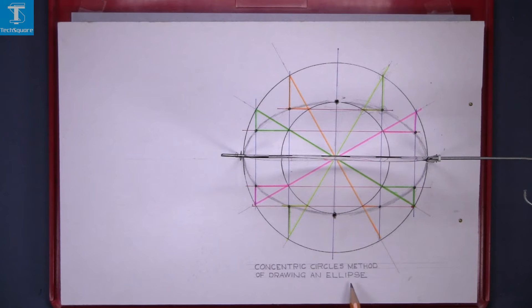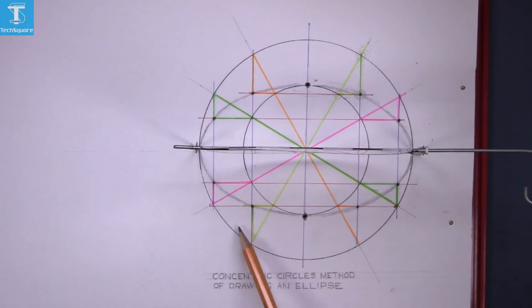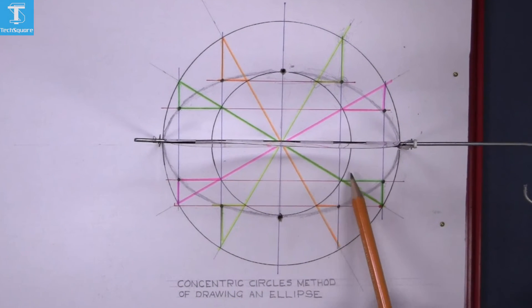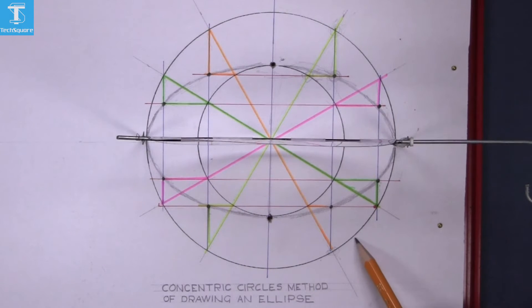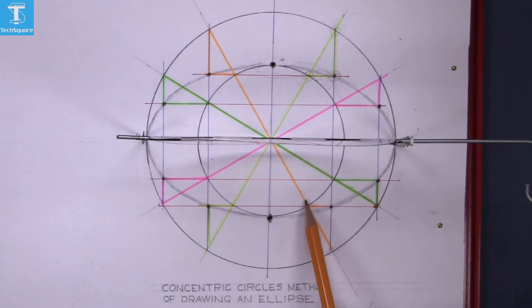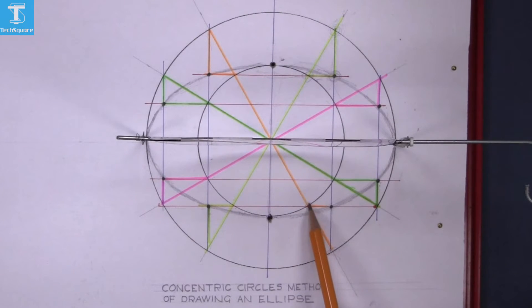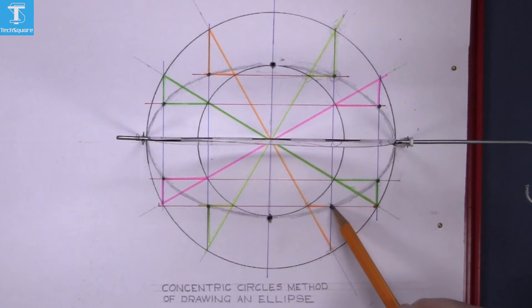Concentric circles method of drawing an ellipse: given the major circle and the minor circle, if we look at this 60-degree line where it intersects the major circle, we draw parallel to the minor axis. Where that 60-degree line cuts the minor circle, we draw parallel to the major axis, and that gets us a point on the ellipse.